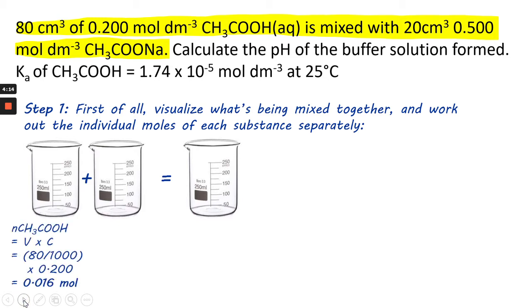Taking the first beaker, that's going to be our ethanoic acid, and you work out the number of moles present, and it gives us 0.016. Do the same for the sodium ethanoate, and you get 0.010. So, these two beakers each contain two separate components, starting.